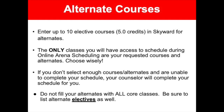After you enter enough course requests for a full eight-period schedule, it is very important to enter alternate course options. Students can enter up to 10 elective courses or 5.0 credits in Skyward for their alternates. The only classes you will have access to schedule during your designated online arena scheduling window are your requested courses and alternates, so choose wisely. If you don't select enough courses or alternates and are unable to complete your schedule during your online arena scheduling window, your counselor will complete your schedule for you.